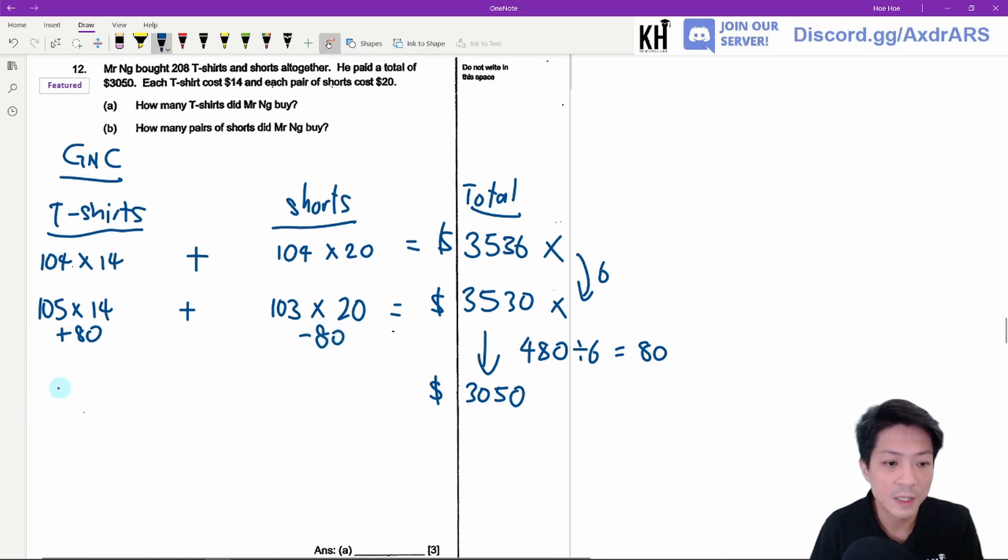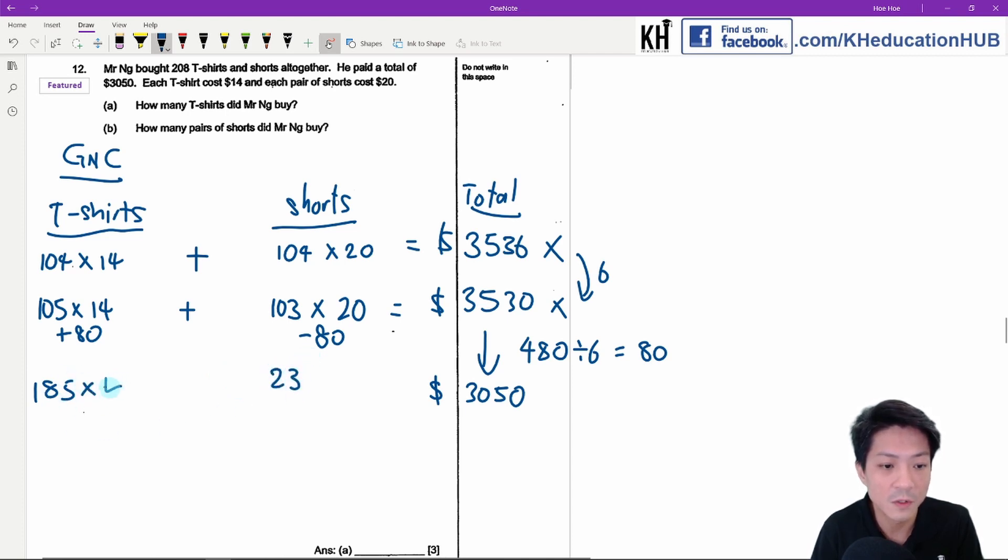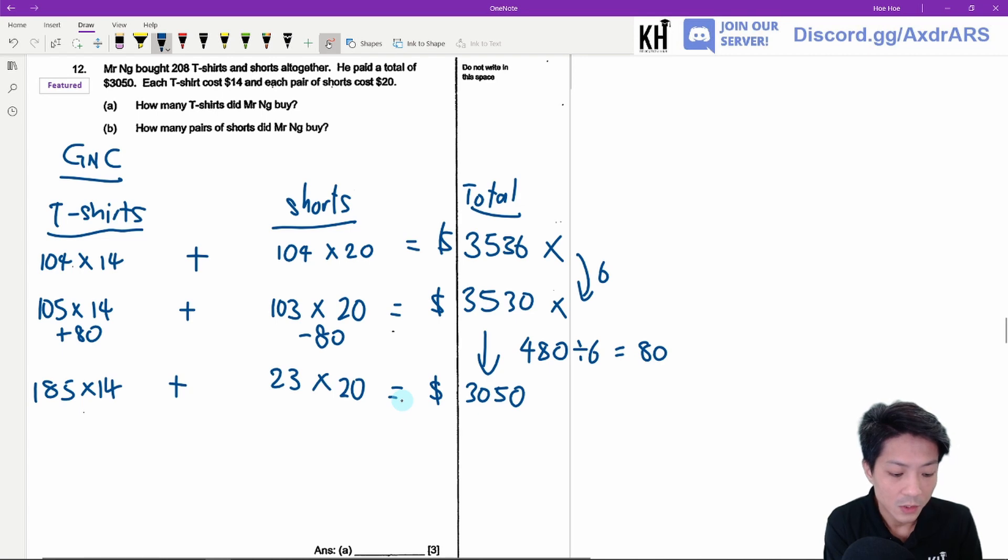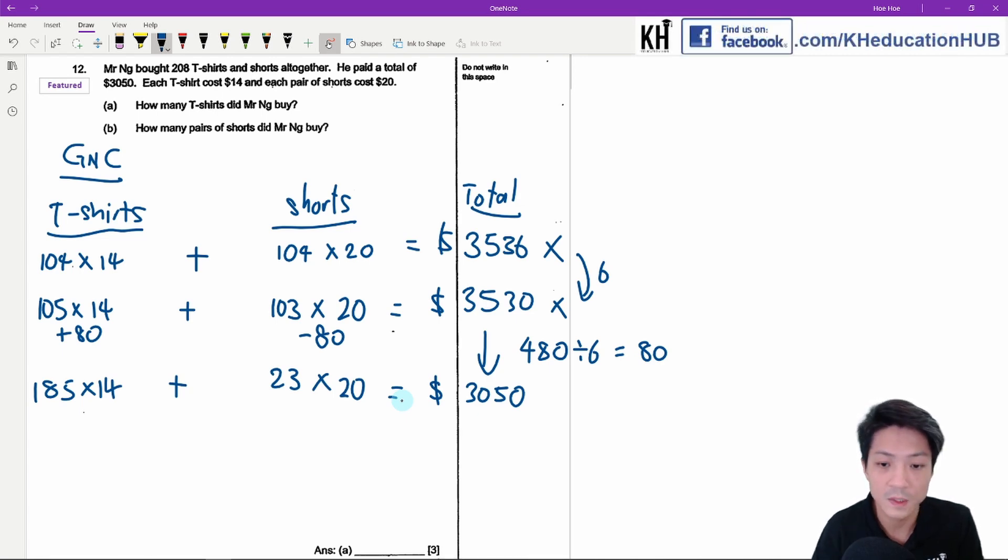So the correct answer should be 185. And the number of shorts will be 23 times 14 plus 23 times 20. Use your calculator to check, and this will give you the correct answer.